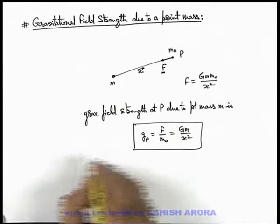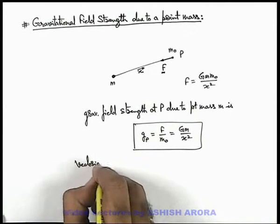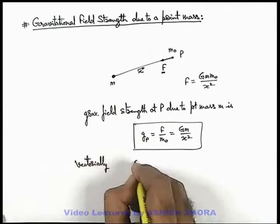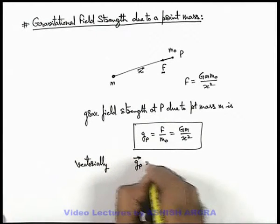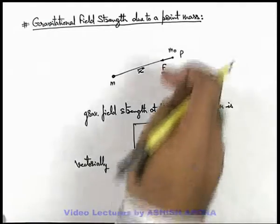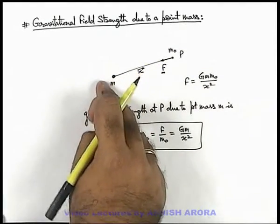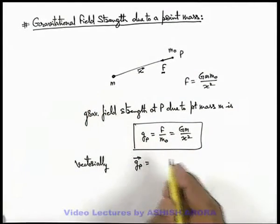And if we wish to write it vectorially then, vectorially it can be written as gₚ vector is equal to, as the direction of force is towards the point mass m, so it is exactly opposite to the vector x.